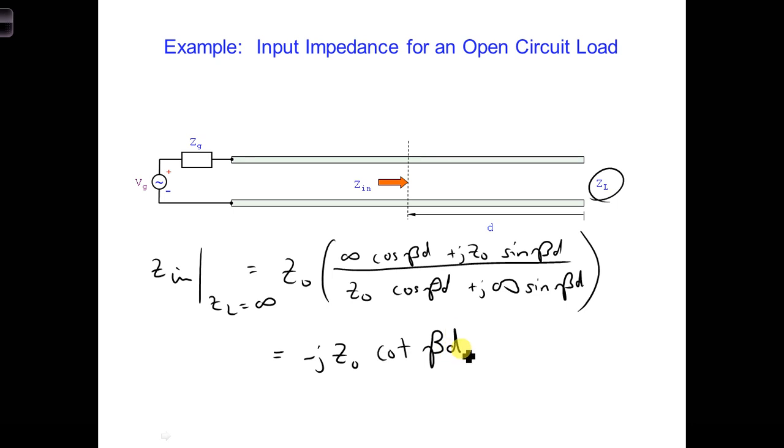Examining this result, we see that Zn is purely imaginary at all positions from the load. It is a pure reactance that varies with distance from the load.